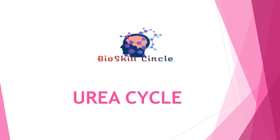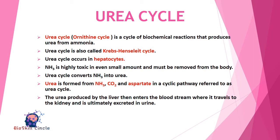Welcome to Bio Skill Circle. Today we are going to discuss one very important and interesting topic: the urea cycle. The urea cycle, also known as the ornithine cycle, is a cycle of biochemical reactions that produces urea from ammonia. This cycle occurs in ureotelic organisms. It is also called the Krebs-Henseleit cycle, named after the scientists who discovered it.